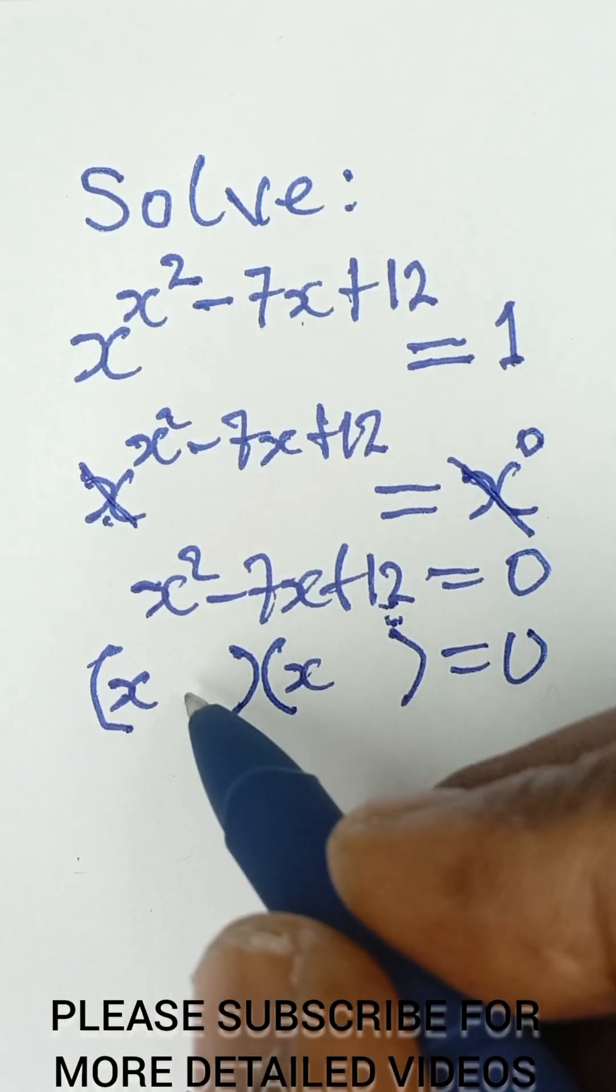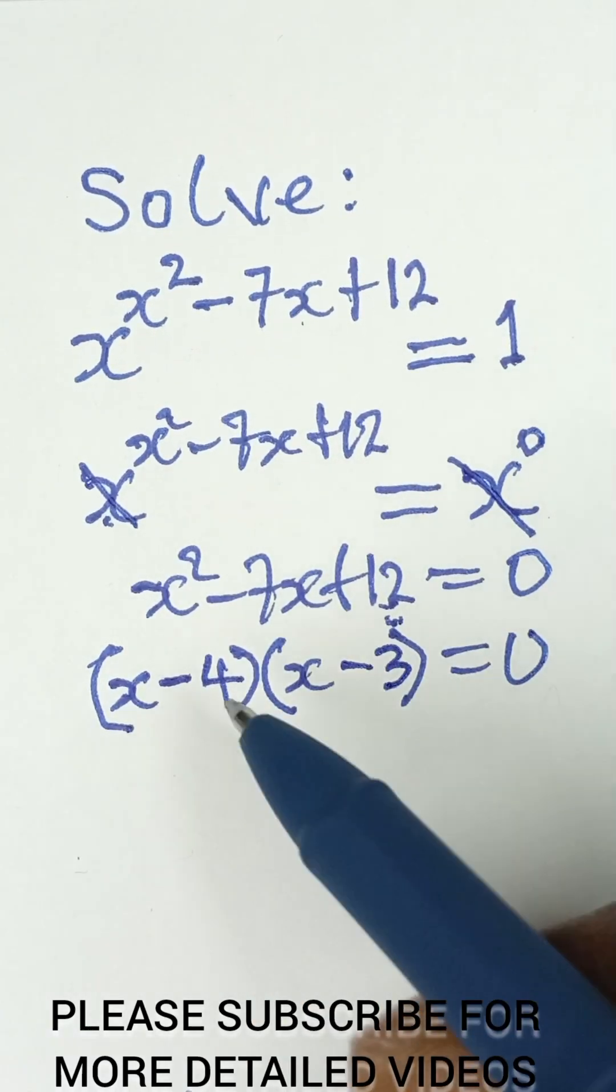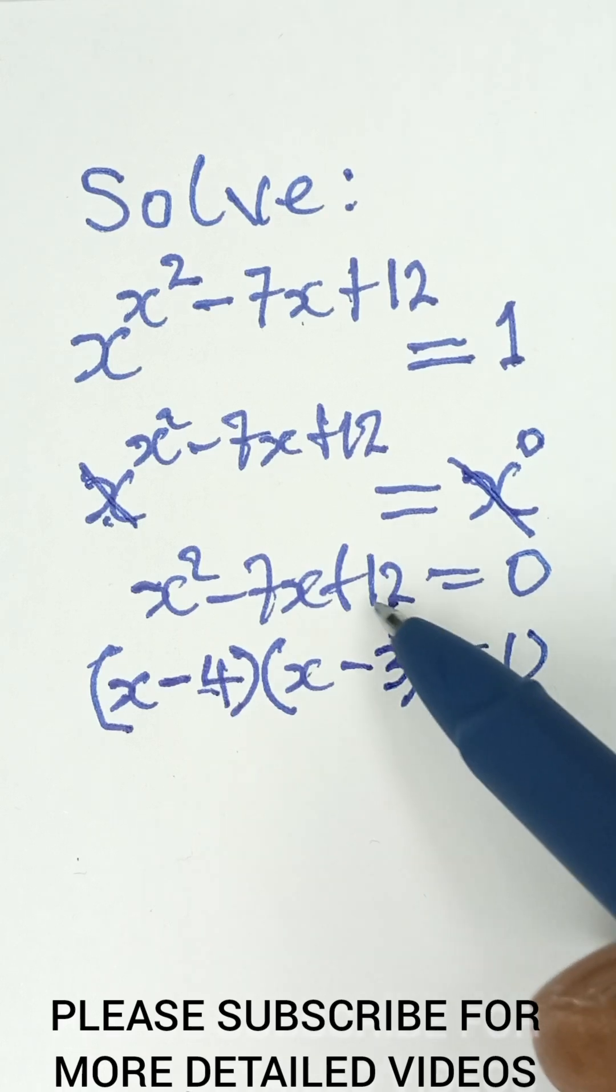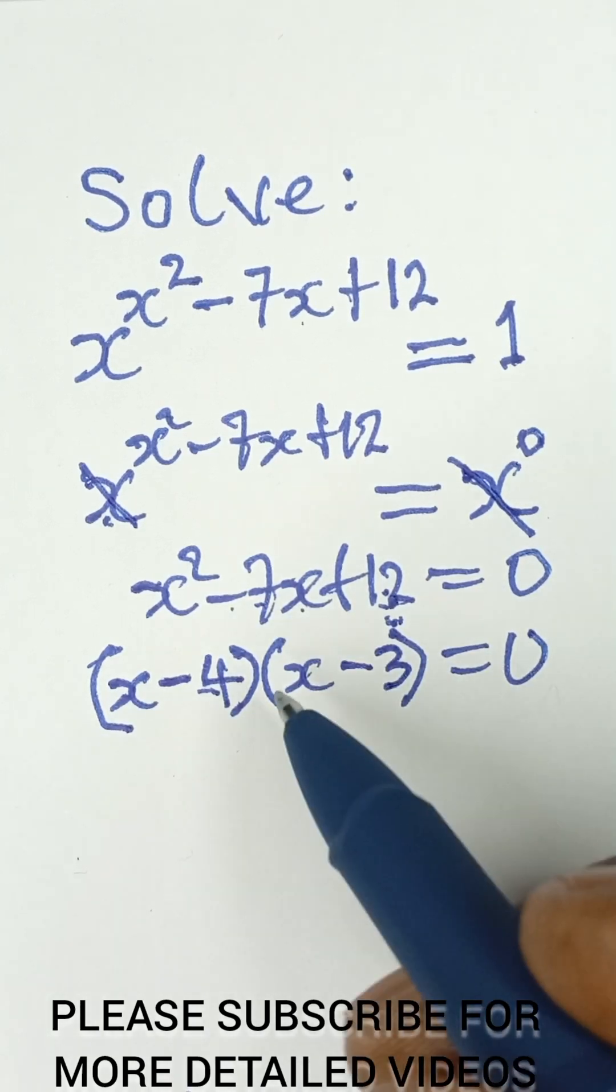Now, those two numbers, you agree with me, they are negative 4 and negative 3. So, if you multiply negative 4 and negative 3 together, it gives you positive 12. And when you add them together, it gives you negative 7. So, from there now, we can equate each of the brackets to 0.